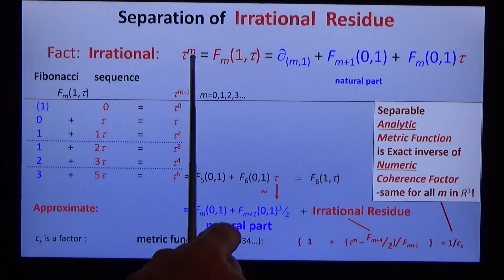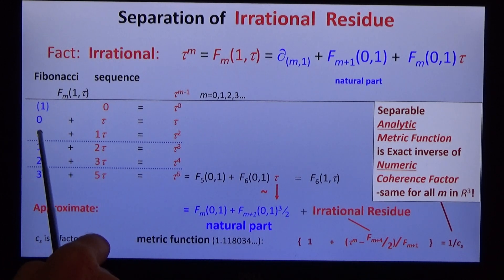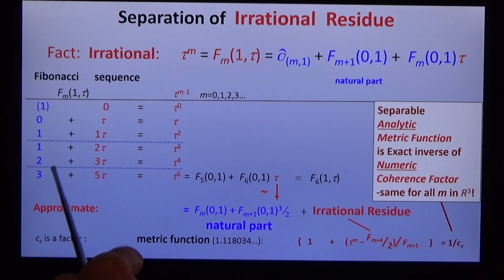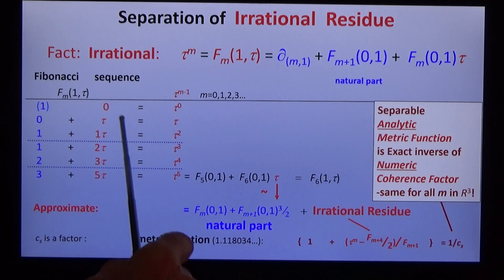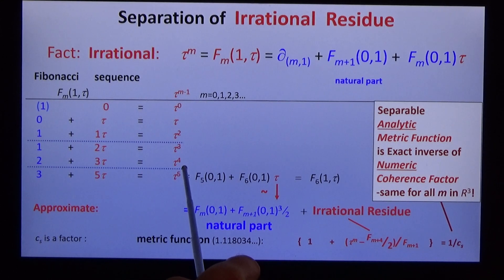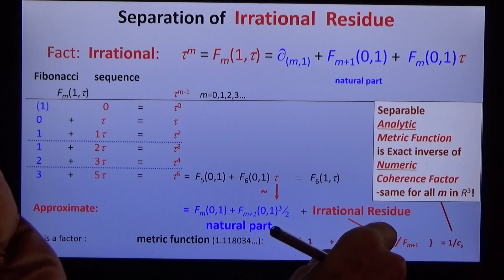First notice that by mathematical induction, this geometric term is the same as this Fibonacci sequence. 1 tau, 1 plus tau, 1 plus 2 tau, 2 plus 3 tau, 3 plus 5 tau, etc. Notice that this separates into a natural part and an irrational part. The irrational part can be approximately naturalised by substituting for tau the fraction 3 half. And then if you subtract this part from the irrational index, you get an irrational residue, which turns into a metric function. And this has the extraordinary property that is the exact inverse of the metric that we discovered numerically. So we have a perfect agreement between analytic and numeric calculations.